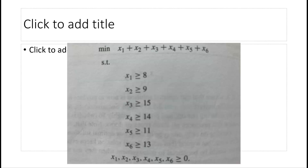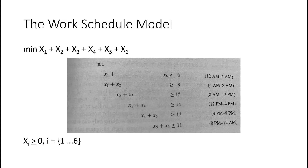To model this as a linear program, we want to realize that our decision variables are not how many people work during a given four-hour period, but how many start at the beginning of each four-hour period. That modifies the variable and makes it something we can use. So, as discussed at the bottom of page 26, we now define Xi — where i is one through six — as the number of employees beginning their shift. For example, X4 indicates how many people begin their shift at 12 p.m.